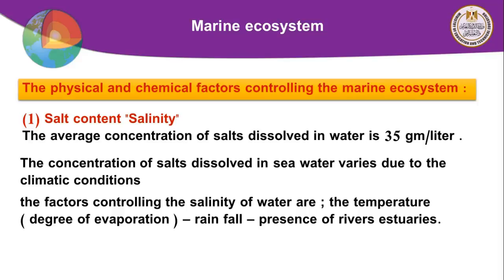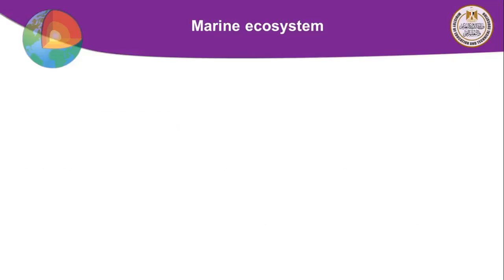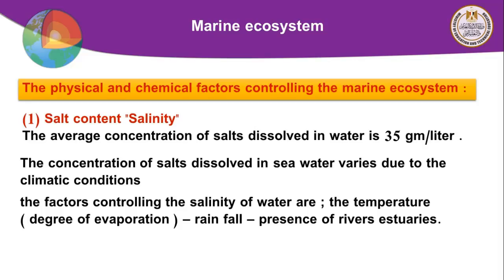The third factor is the presence of rivers and estuaries — estuaries meaning downstream. Rivers carry fresh water, so they decrease the concentration of salt and lower the salinity.